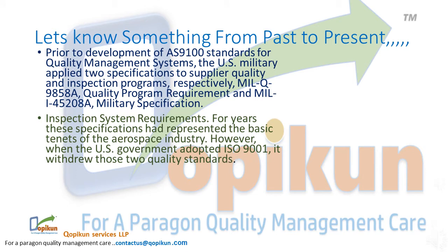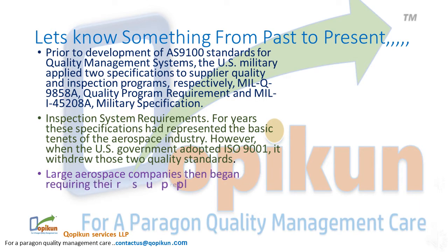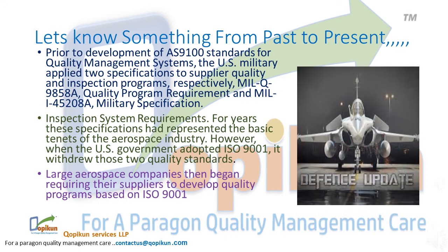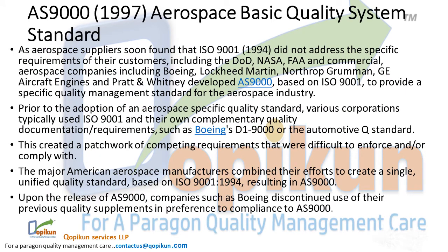However, when the U.S. government adopted ISO 9001, it withdrew those two quality standards. Large aerospace companies then began requiring their suppliers to develop quality programs based on ISO 9001, leading to the Aerospace Basic Quality System Standard AS9000 in 1997.